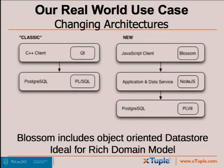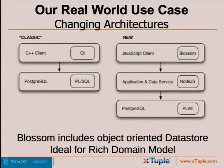We've learned something new we can do with Postgres, and we're going back to our real-world use case. We've got the classic client on the left and want to go to a three-tier architecture on the right. We made a decision to go with a JavaScript architecture. Specifically, we're using a client framework called Blossom — brand new, actually a fork of SproutCore, a rich client framework developed by Apple and spun off as an open-source project. Blossom is SproutCore with a special view layer, which I'll show you near the end. In the middle we've chosen Node.js to build our application and data service.